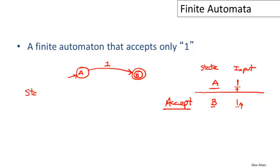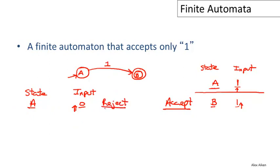Let's do another execution — starting in state A with input '0'. We look at our machine and see there is no transition on '0'. The machine gets stuck and doesn't make any move. We're not at the end of the input, so this is a reject. Now let's try input '1 0'. We start in state A, read a '1' and move to state B. Now we're in state B with next input '0', but there is no transition out of state B on '0'. Even though B is an accepting state, we haven't consumed the entire input, so the machine rejects this string too.